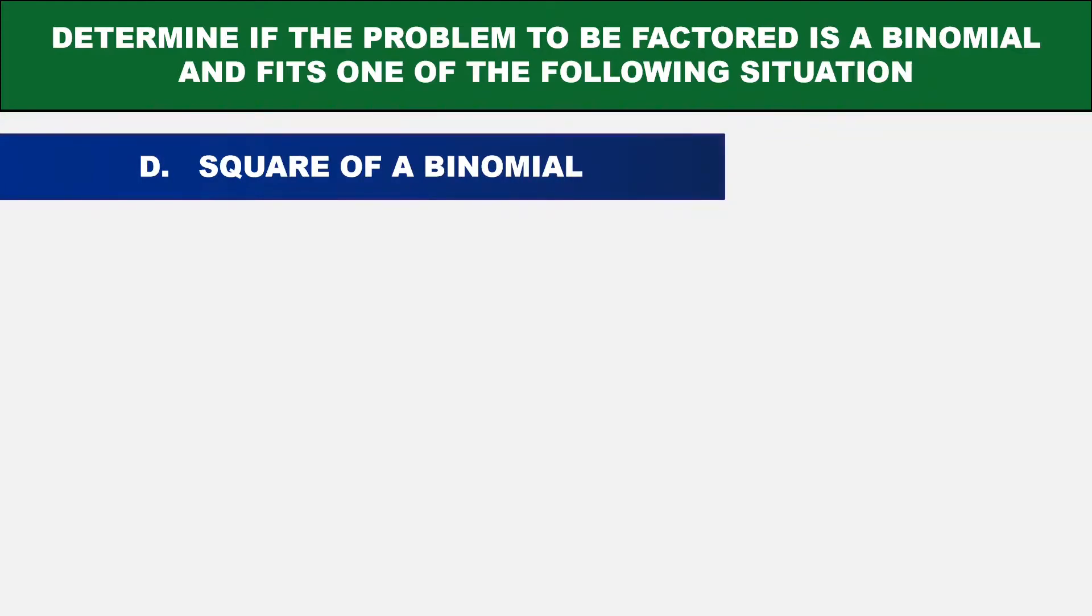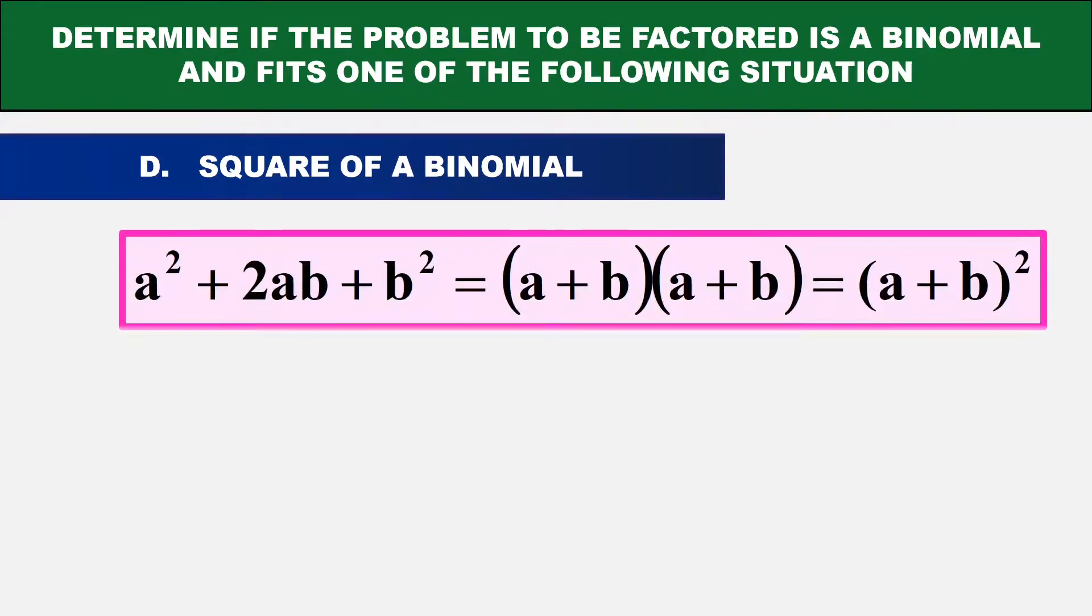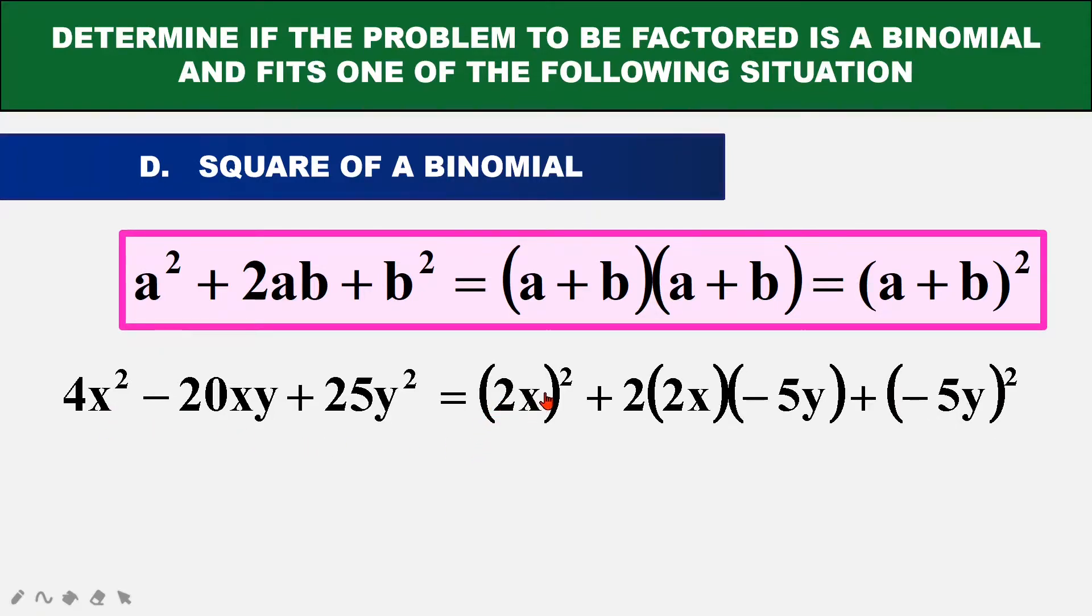In our fourth case, we must check if there is any square of a binomial. For example, this type, 4X squared minus 20XY plus 25Y squared. So this 4X squared can be transformed to 2X squared, and 25Y squared I will transform to negative 5Y squared. Because I have a negative here, so I'm going to choose the one with a negative.